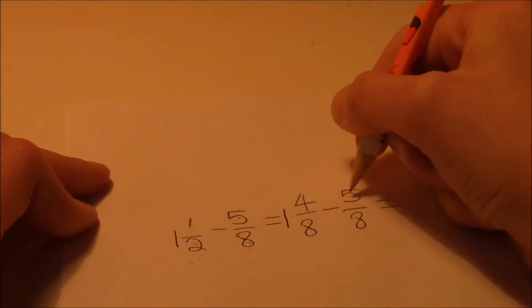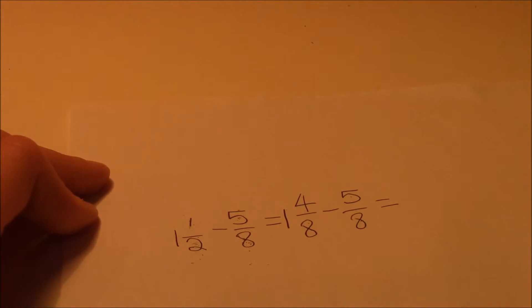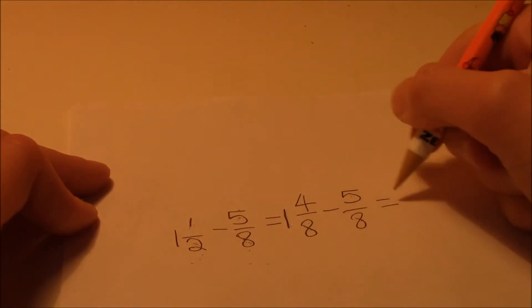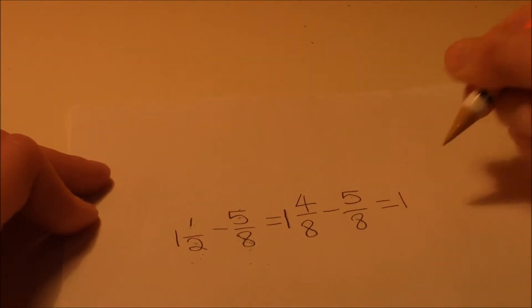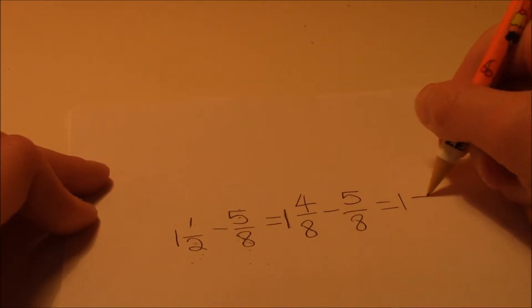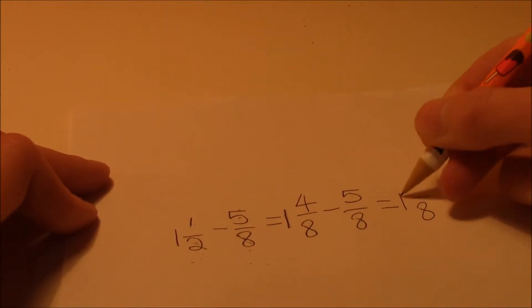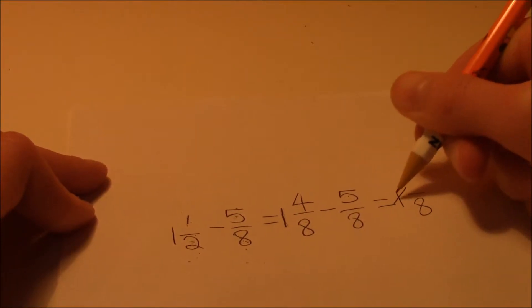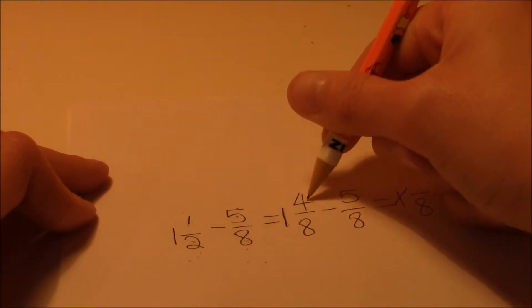Now, since 5 is bigger than 4, there's a way to do this. This is where the whole number comes in. So we're going to do 1 for the whole number, and then 8. But, since there's no more whole number, we're going to cancel it out.